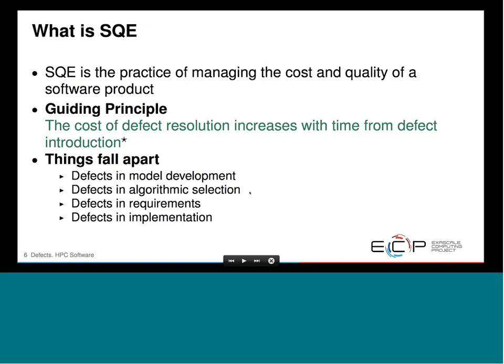We start by defining some general terms. Software quality engineering is really the practice of managing the cost and quality of the software process. This gives me my star guiding principle: the cost of defect resolution increases with time from defect introduction. If you turned off here, you would get my one concept.